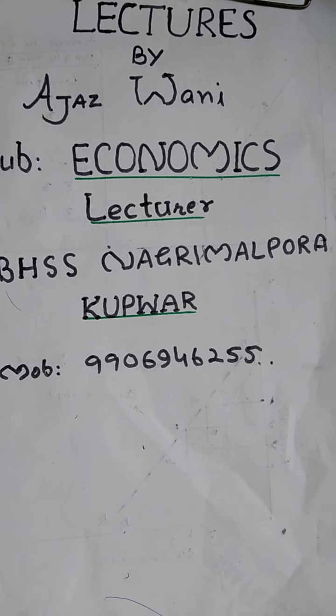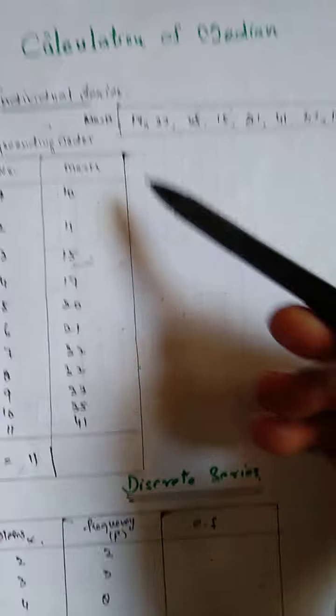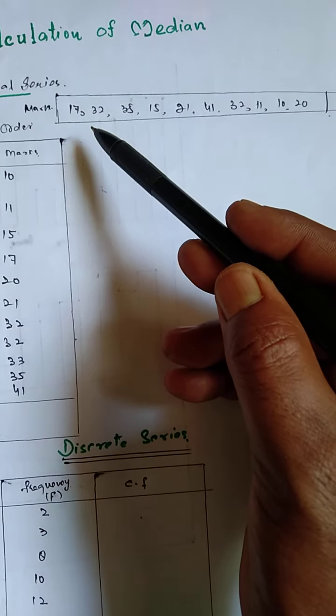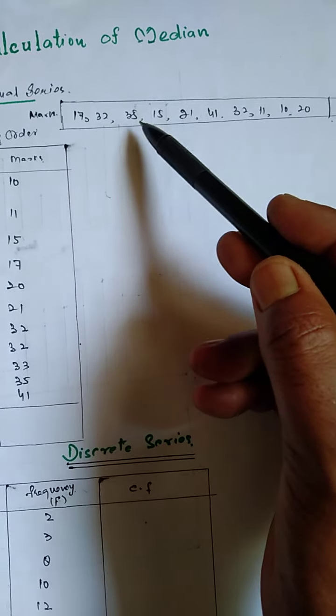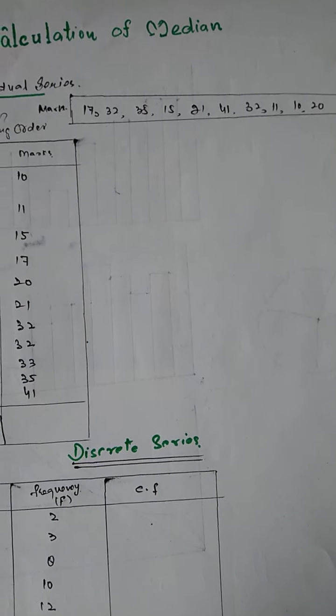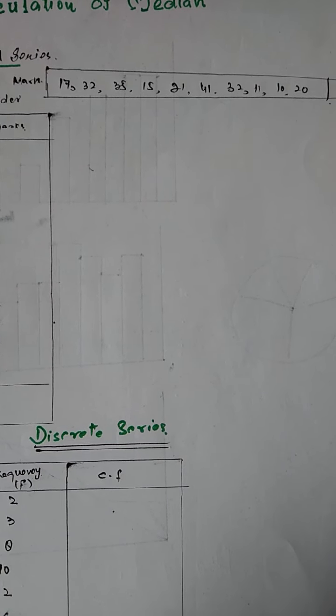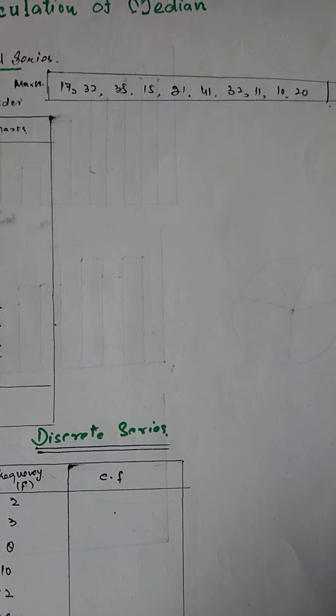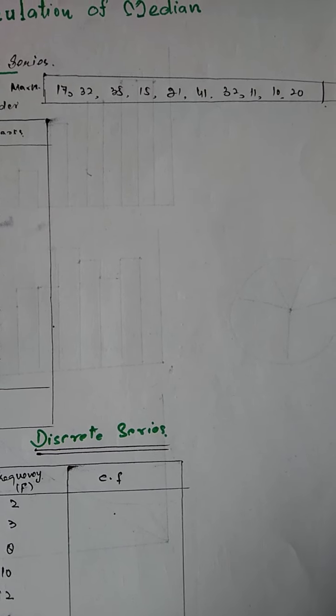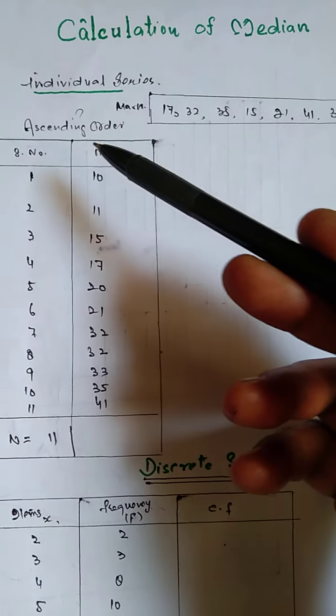First, let's look at the individual series. We have a series showing marks of students, 11 in number: 17, 32, 35, 15, 21, and so on. Individual series is the series where there is no frequency. In this series, first you have to arrange all the values or different items of a series in ascending or descending order.